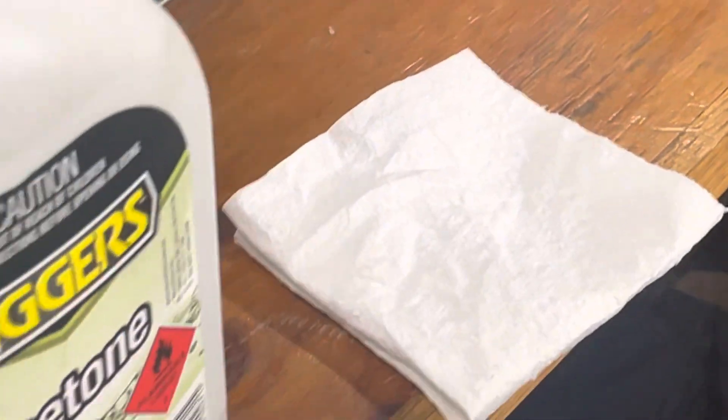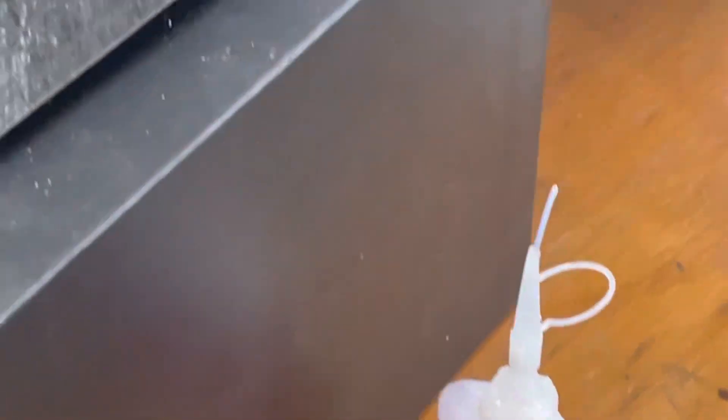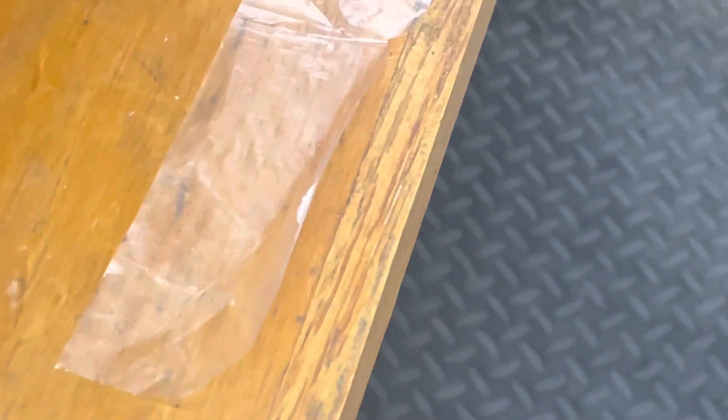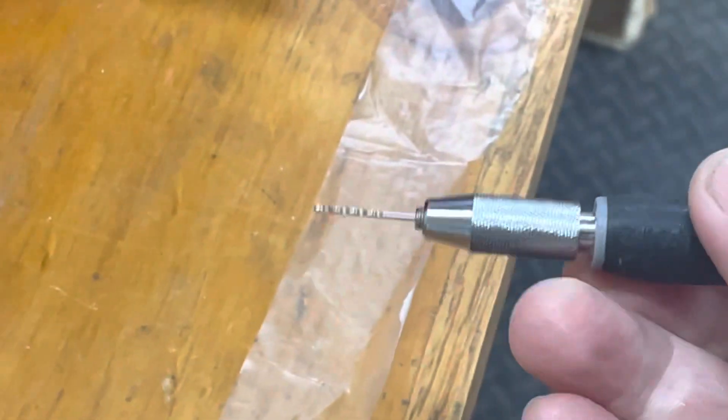...is some acetone, paper towel, thin CA with an applicator tube, some plastic film—this could just be sandwich bag material—a pin vise, and a tiny drill. Right, so there you can see the blister.